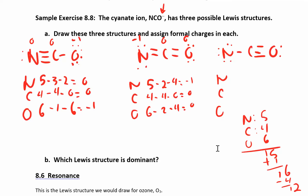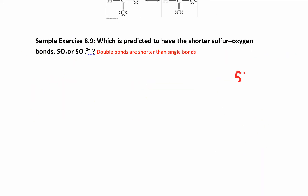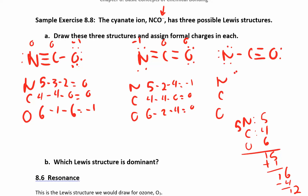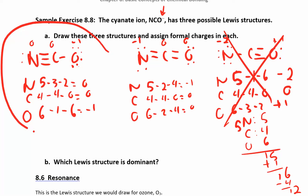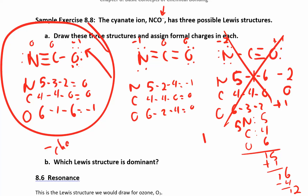For structure 3: nitrogen has 5 − 1 line − 6 dots = −2; carbon has 4 − 4 lines − 0 dots = 0; oxygen has 6 − 3 lines − 2 dots = +1. This gives −2, 0, +1 — the worst option, with a large negative charge and a positive charge on the most electronegative atom. Therefore, structure 1 is the best because it places the negative charge on oxygen, the most electronegative atom.